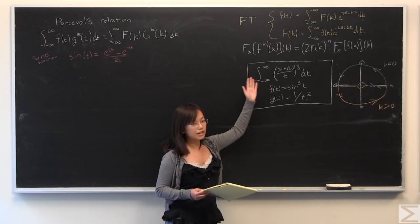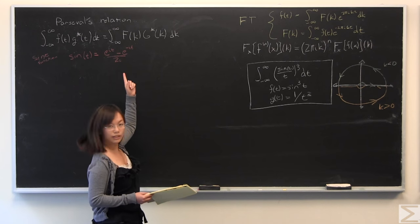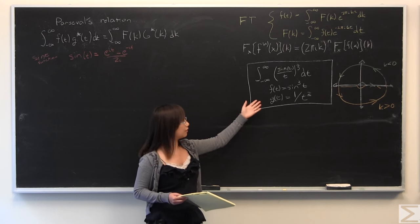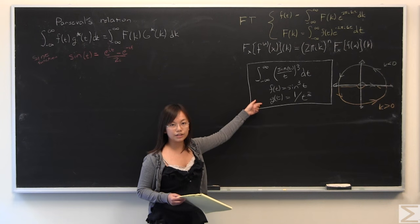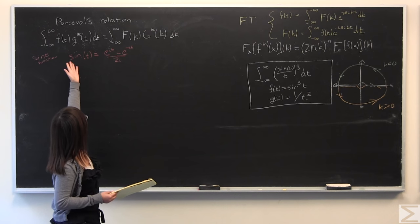So start with this, and it asks you to evaluate this with Parseval's relation. I give you Parseval's relation up here. I also have already broken this down into f(t) and g(t) so that the notation matches what we want.